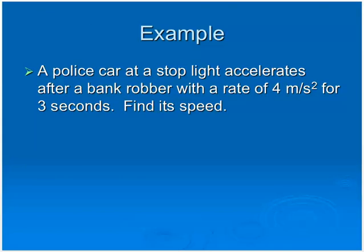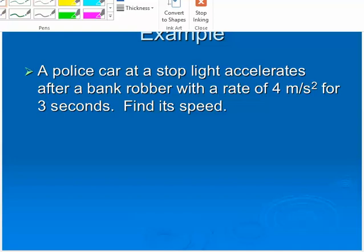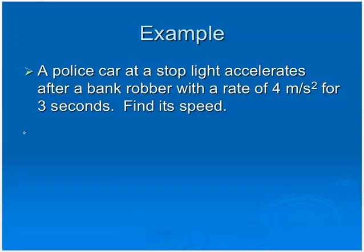Here's our first example. A police car at a stoplight accelerates after a bank robber with a rate of 4 meters per second squared for 3 seconds. Let's find its speed. What they want you to understand is because they aren't giving you an initial speed, we can say that vi is 0 because they're at a stoplight.